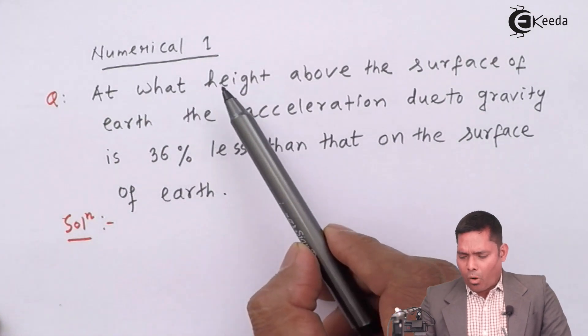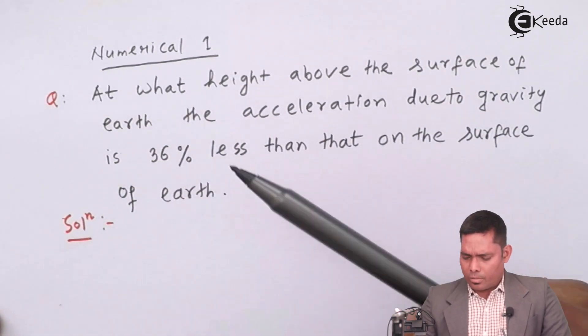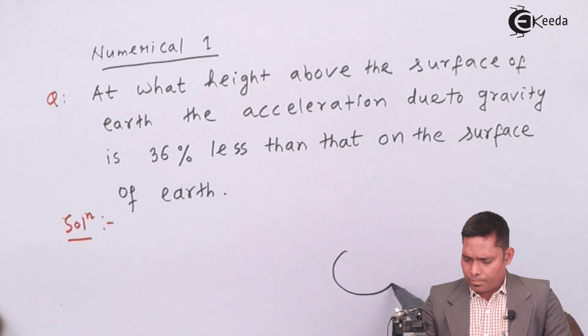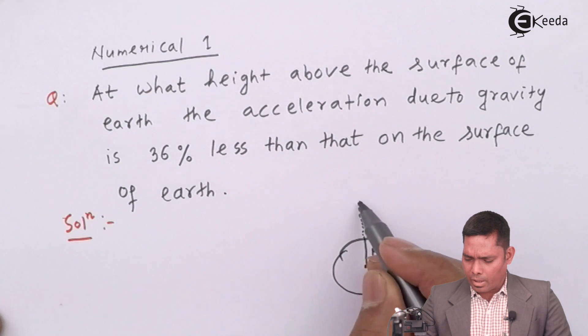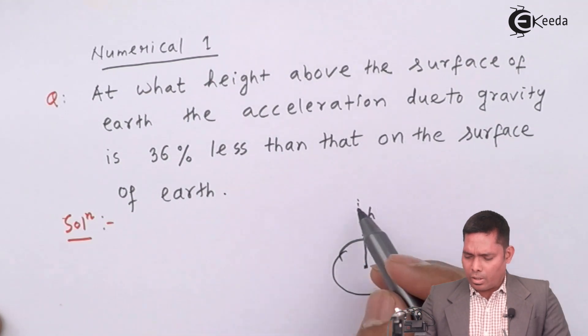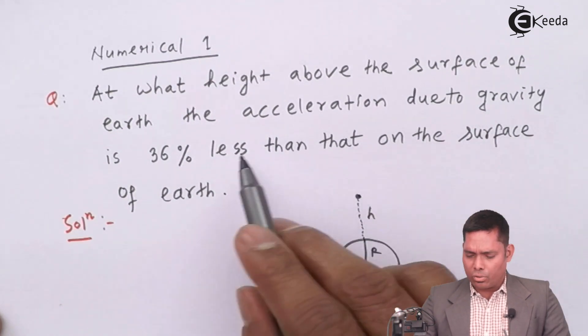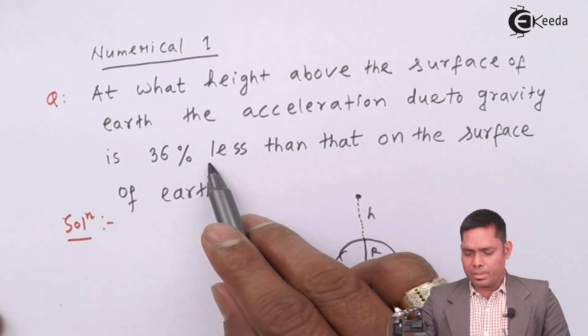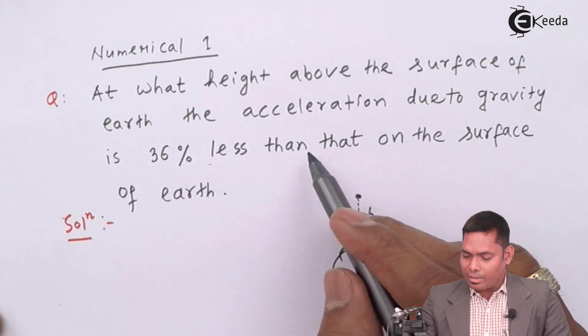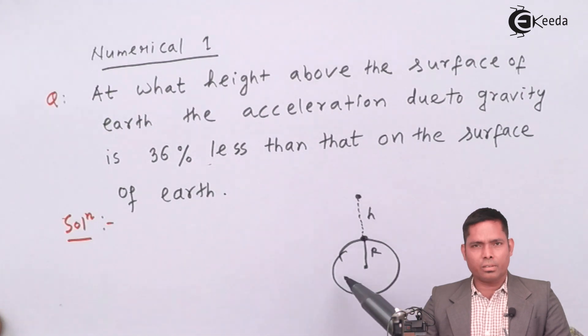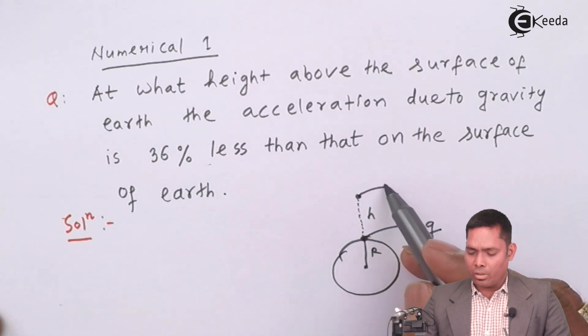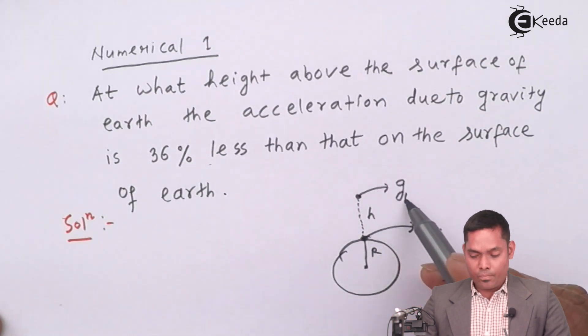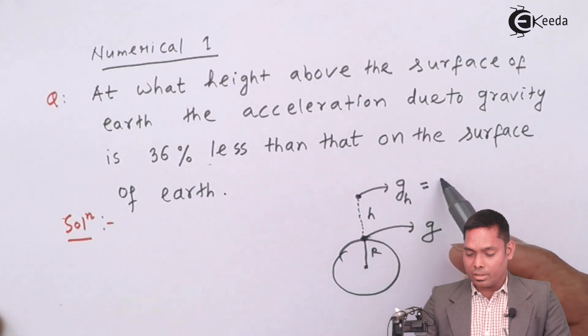So this is the question. What height above the surface of earth? Suppose this is earth. This is my R. At what height above the surface? Suppose this height is h. Here, they are saying that the acceleration due to gravity is 36% less than that on the surface of the earth.